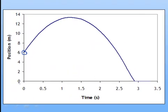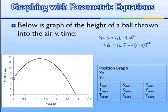If we look at the x-axis, it looks like the smallest value is zero, and the biggest value is three and a half, and the lines go up by half-second intervals. That would indicate an Xmin of zero, an Xmax of three and a half, and an Xstep value of 0.5.